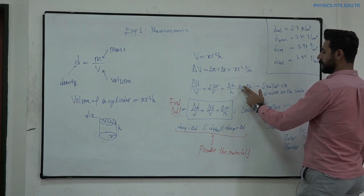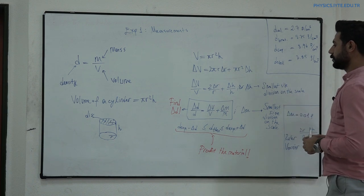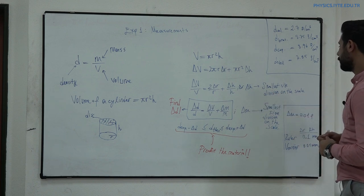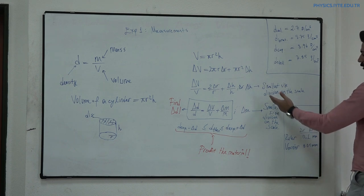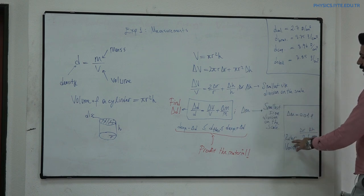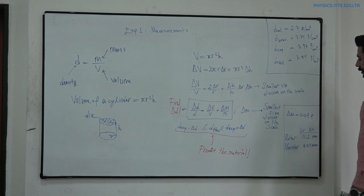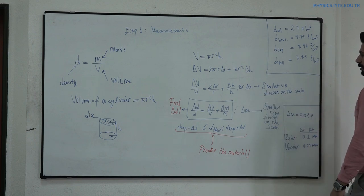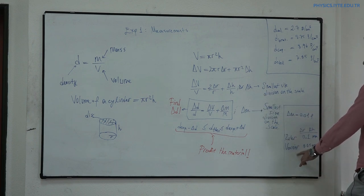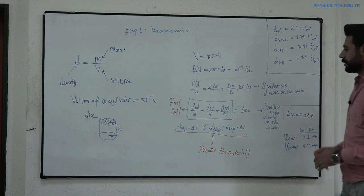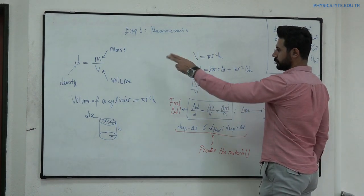Where delta R and delta H are the small size divisions on the scale — these two parameters depend on the measurement tools. If these distances are measured with a ruler, delta R and delta H must be 1.1 mm. If you measure R and H with the help of a Vernier caliper, delta R and delta H will be 0.05 mm.